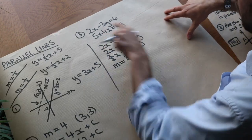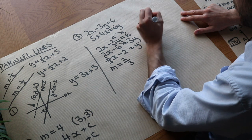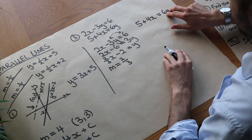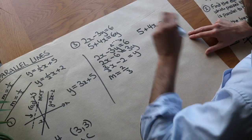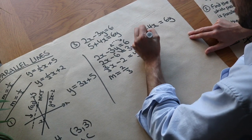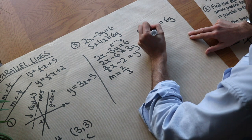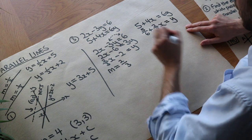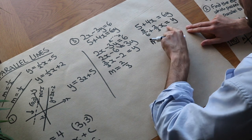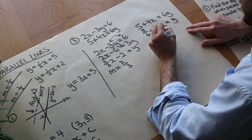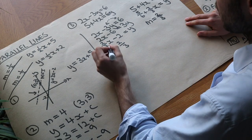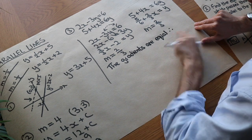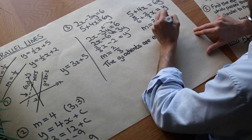Now for the second equation: 5 plus 4x equals 6y. Since 6y is already on its own, we just divide both sides by 6, giving y equals five-sixths plus four-sixths x, which simplifies to y equals two-thirds x plus five-sixths. The gradient here is the coefficient of x, which is also two-thirds. The gradients are equal — therefore the lines are parallel.